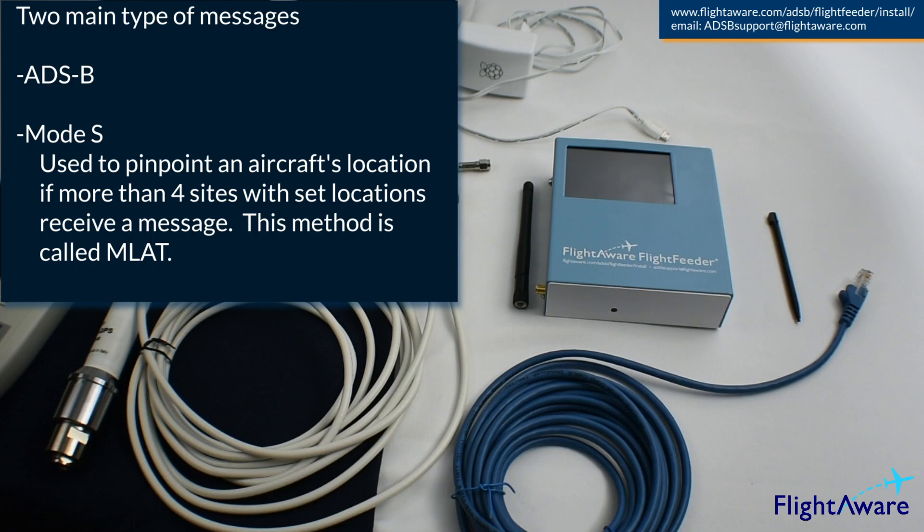MODES messages, on the other hand, don't include location. So if your station sends a message to FlightAware about a particular aircraft, FlightAware will look for other stations nearby that also sent a message about the aircraft. If four or more stations send a message to FlightAware, the location of that aircraft can be pinpointed. This is called multilateration, more commonly referred to as MLAT.